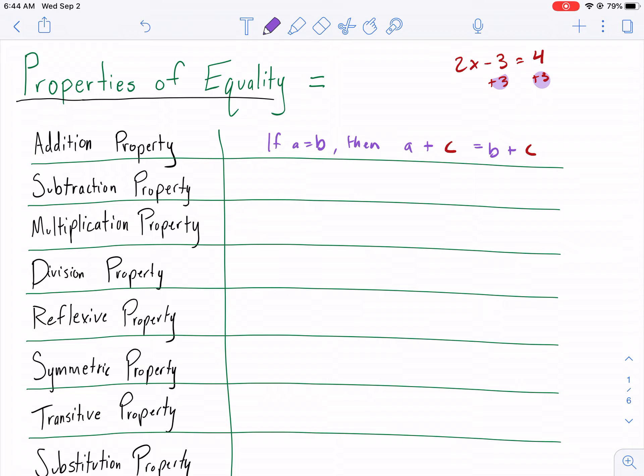Moving on, subtraction property. We're going to cruise through this because this is something that's pretty self-apparent. We have A minus C this time because it's just the opposite. So we can subtract something from both sides and make it equal.